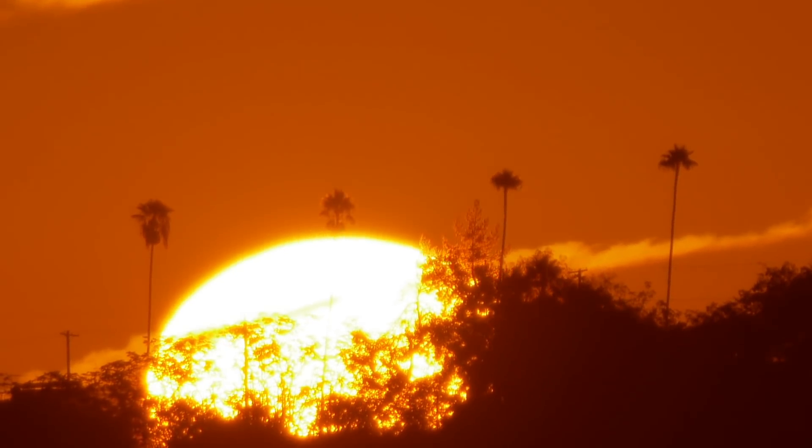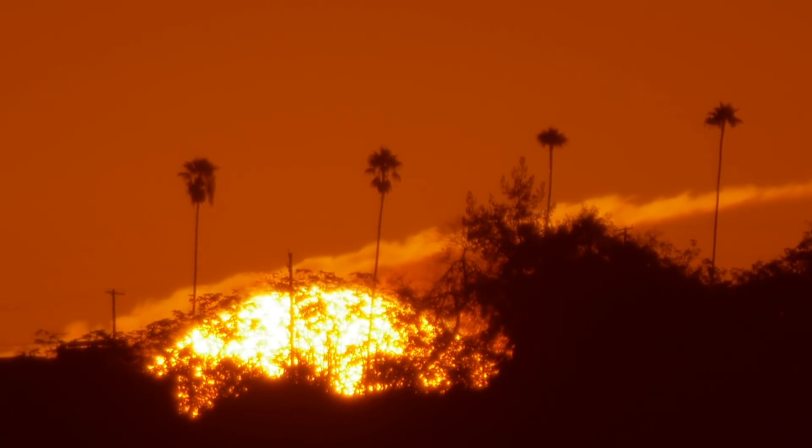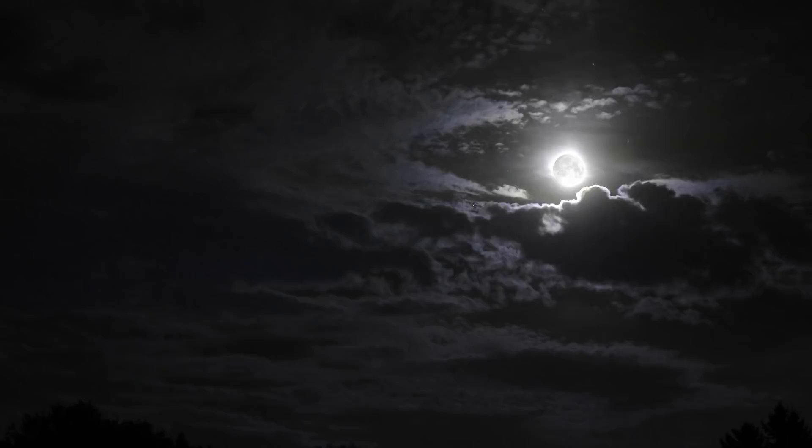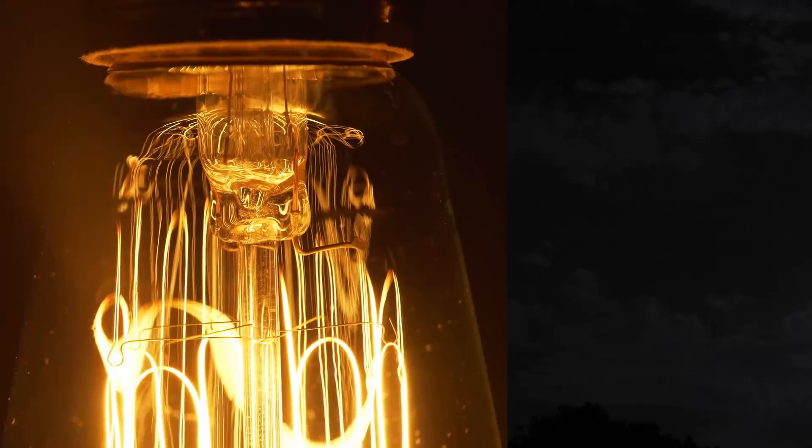The parts of the world that were experiencing night at the time that the sun disappeared wouldn't see the moon because the moon's light is reflected from the sun. It would be complete and total darkness, minus the light from electricity.